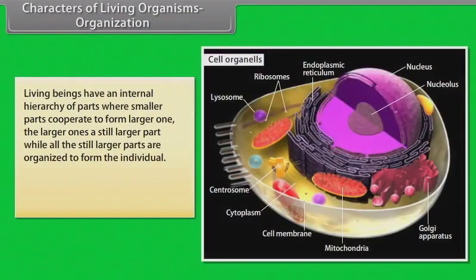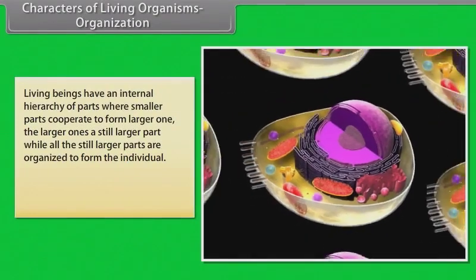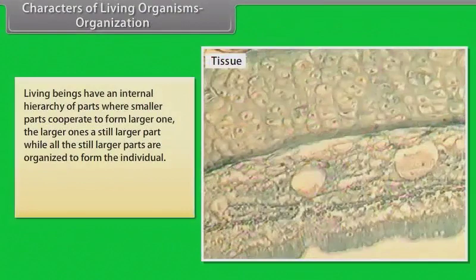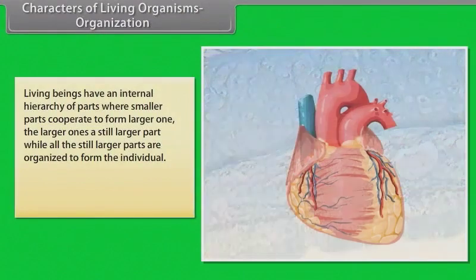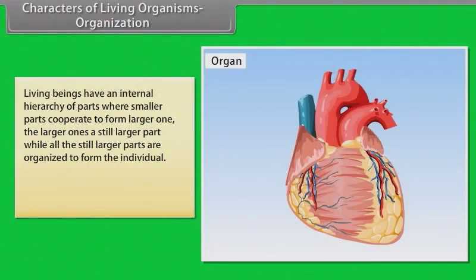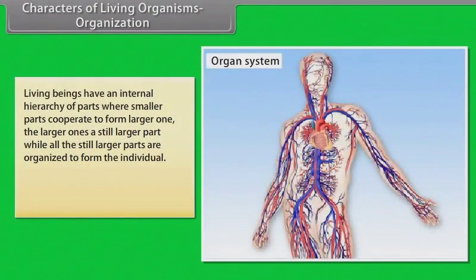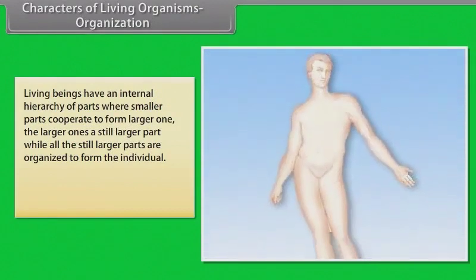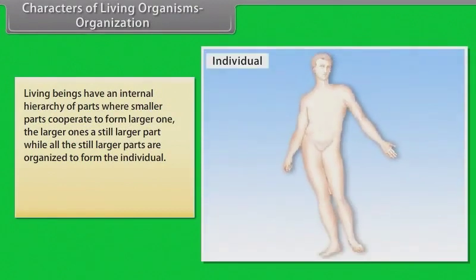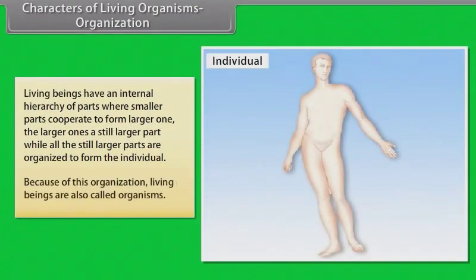Living beings have an internal hierarchy of parts where smaller parts cooperate to form larger ones. The larger ones form still larger parts, while all the still larger parts are organized to form the individual. Because of this organization, living beings are also called organisms.